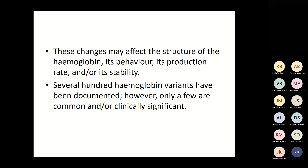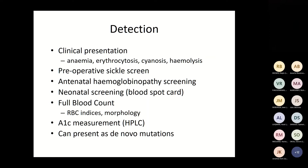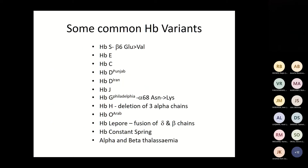Several hundred haemoglobin variants have been documented; only a few are common or clinically significant. Patients may present with anaemia, erythrocytosis, cyanosis, or haemolysis. We pick these up through pre-operative sickling screens, antenatal haemoglobinopathy screening — as London is a high-prevalence area where we screen everyone — neonatal screening from blood spot cards, full blood count red cell indices, morphology, haemoglobin A1c measurements, or as de novo mutations.